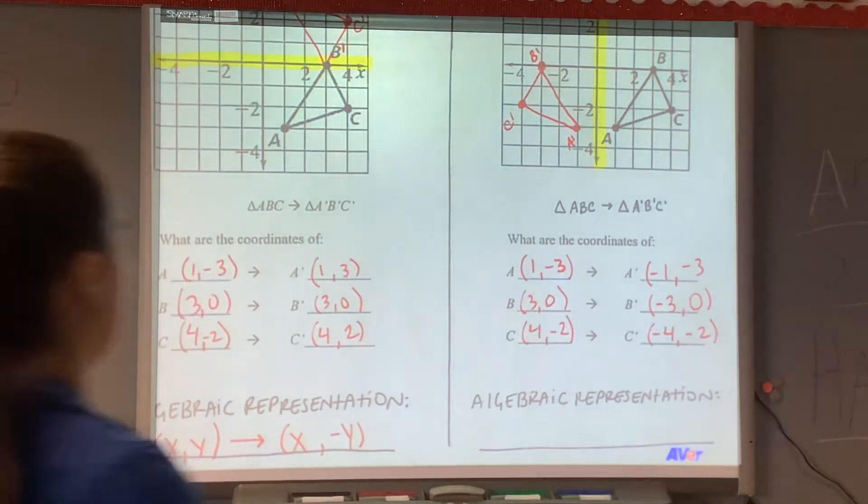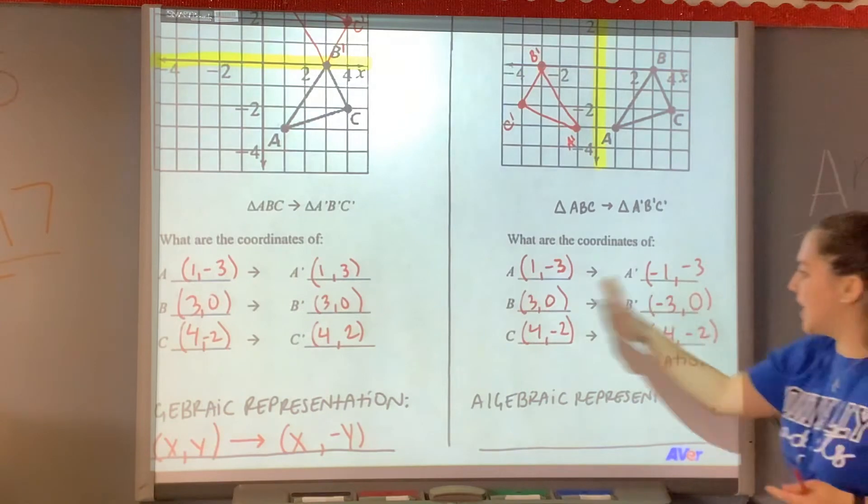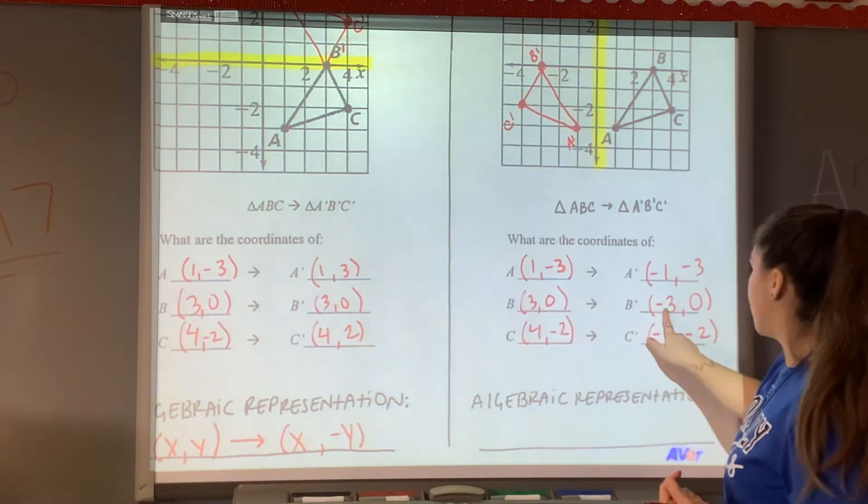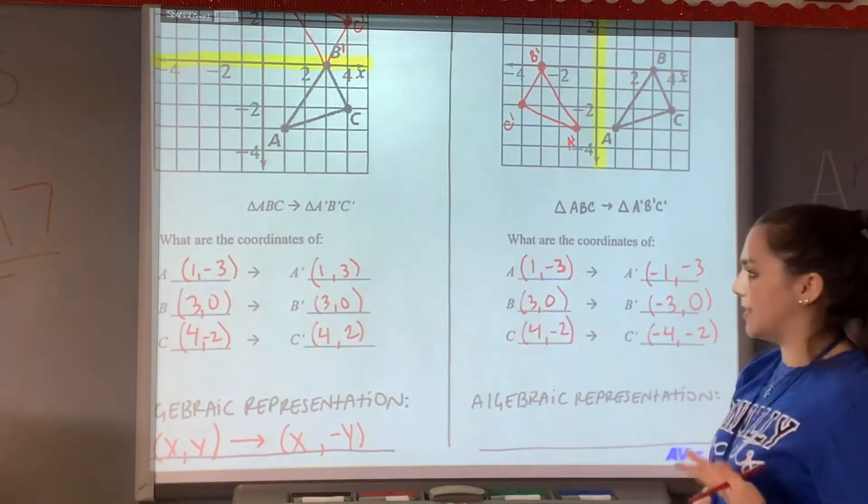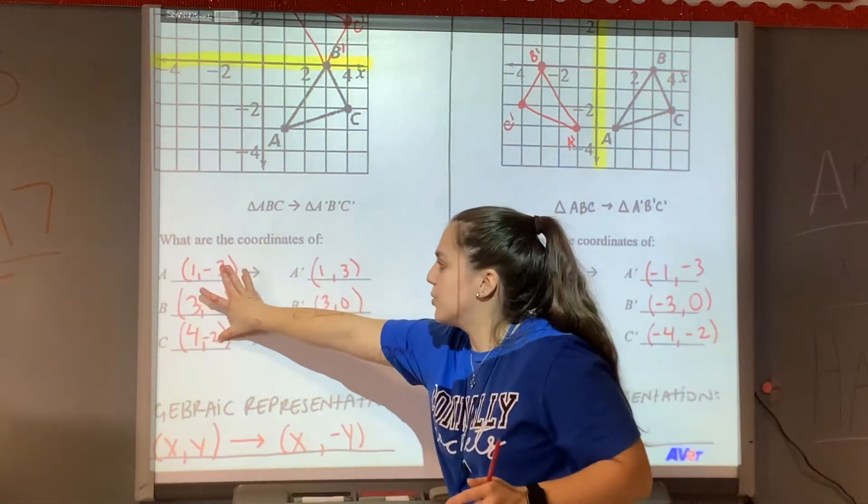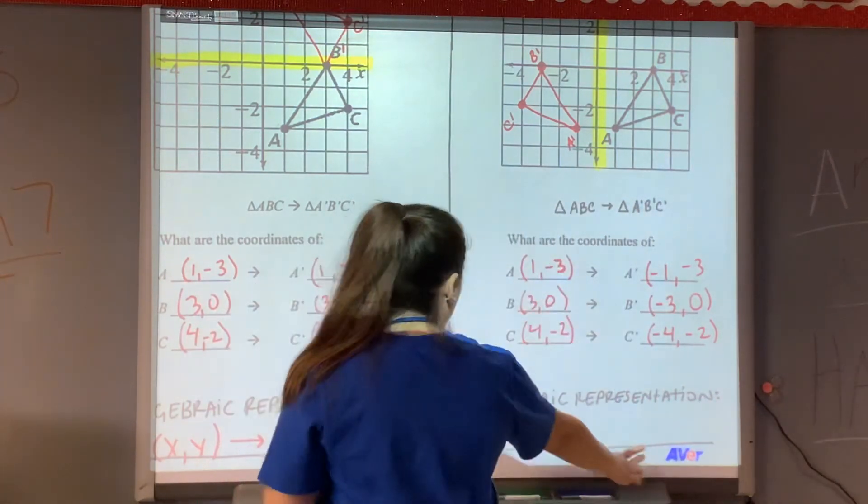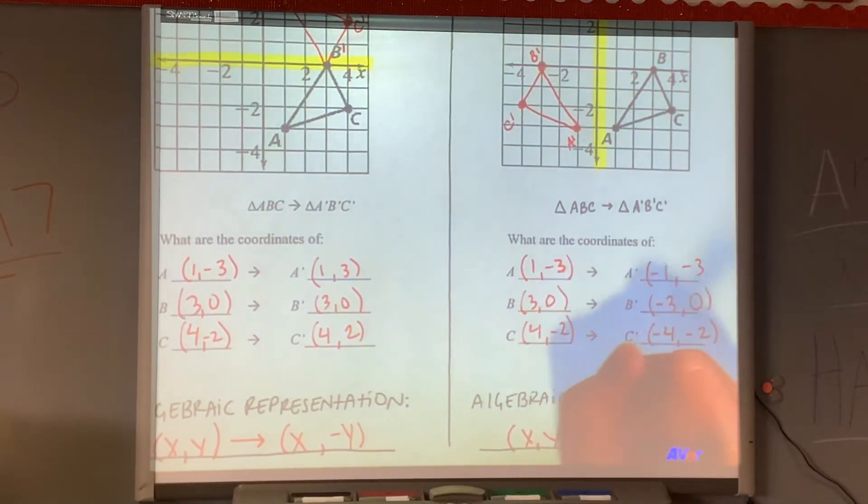Alright, so I have a lot of negatives this time, which makes sense because it's in this quadrant here. The numbers stayed the same. What I do notice that's different is this 1 became a negative 1. This 3 became a negative 3. This 4 became a negative 4, which means it's the opposite. If it was positive, now it's negative. It's the opposite. Kind of like what happened here. These were negative and then became positive. So I bet the same step is going to happen just on our algebraic representation for the y-axis flip.